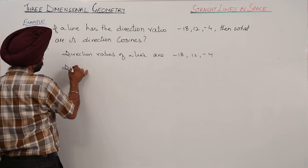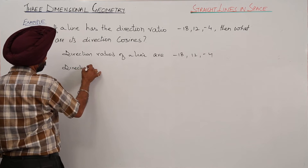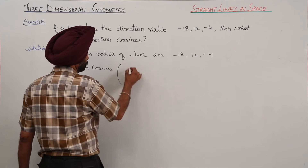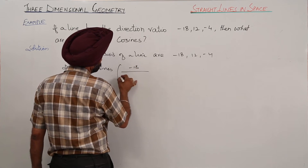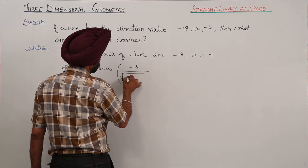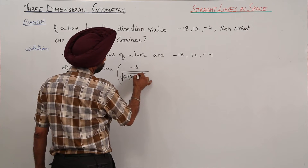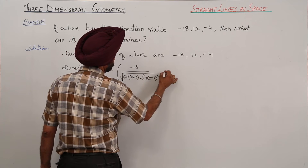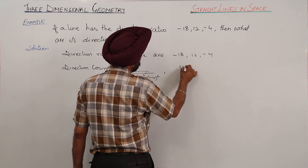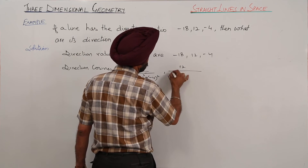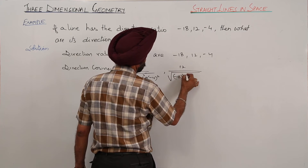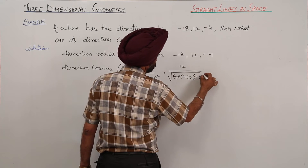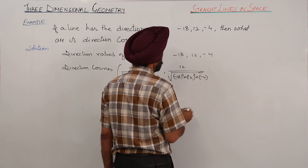Direction cosines are: negative 18 upon square root of (negative 18) squared plus 12 squared plus (negative 4) squared; 12 upon square root of (negative 18) squared plus 12 squared plus (negative 4) squared; and negative 4 upon square root of (negative 18) squared plus 12 squared plus (negative 4) squared.